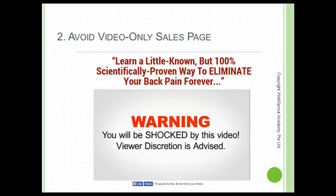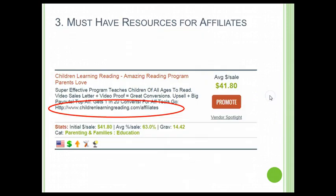Second, avoid a video-only sales page — later I will show you how to identify whether a sales page is video only. Third, you must make sure that there are affiliate resources available before choosing a product. For example, there should be a link for you to obtain banners, emails, or keywords about this product.